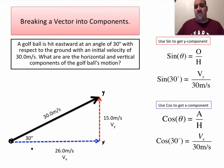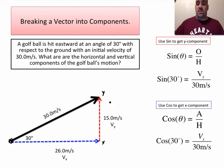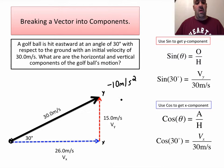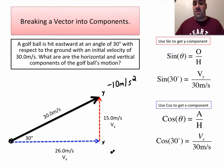The golf ball is always going to be traveling in the x direction at a rate of 26 meters per second. In the y direction, the ball has an initial velocity of 15 meters per second. Gravity will slow it down, and the ball will return because gravity is slowing it in the y direction — there's an acceleration of negative 10 meters per second squared. In the x direction, if we ignore air resistance, there won't be any acceleration; the ball just has a constant velocity. It's going to land with the same x-speed it was hit with: 26 meters per second.